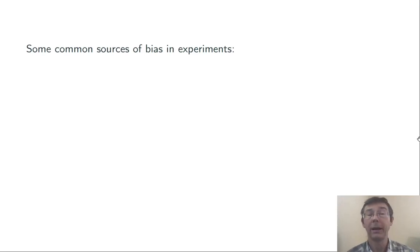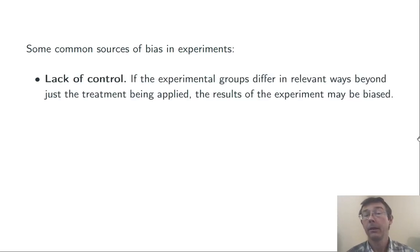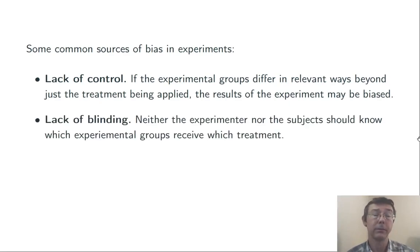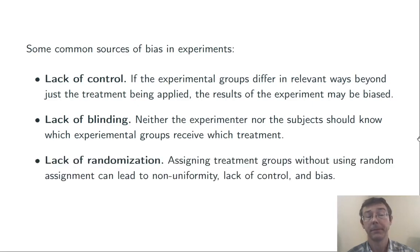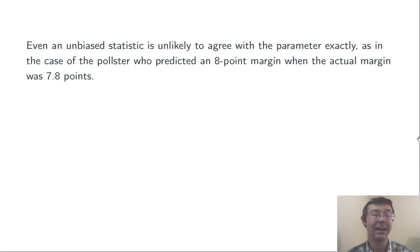A few common sources of bias in experiments. Lack of control. If the experimental groups differ in relevant ways beyond just the treatments being applied, the results of the experiment could be biased. Lack of blinding. Neither the experimenter nor the subject should know which experimental groups receive which treatment. Lack of randomization. Assigning treatment groups without using random assignment can lead to non-uniformity, lack of control, and bias.